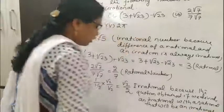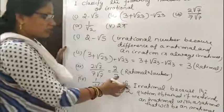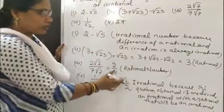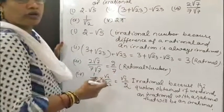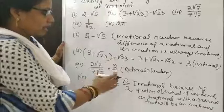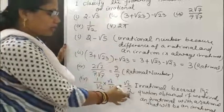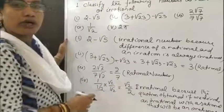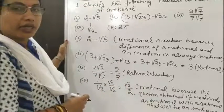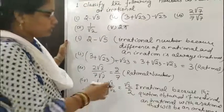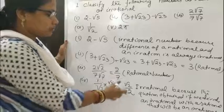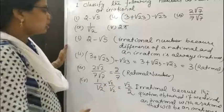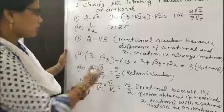If we find the decimal representation of √2, that will be non-terminating and non-repeating. And that divided by 2 also becomes a non-terminating, non-repeating decimal expansion. So that will be an irrational number.